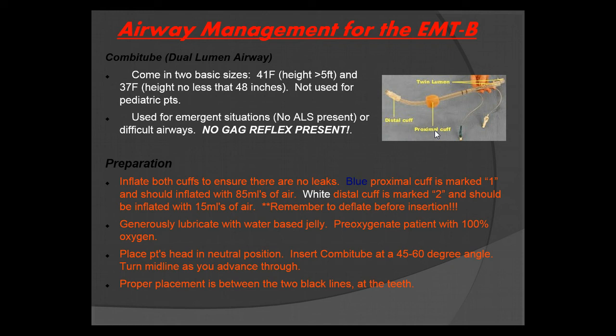To prepare the combi tube, inflate both cuffs to ensure there are no leaks. The blue or proximal cuff is marked number 1 and should be inflated with 85 mL of air. The white distal cuff is marked 2 and should only be inflated with 15 mL of air. Remember to deflate both cuffs before you attempt to place the combi tube. Then generously lubricate the tip with water-based jelly — every service provides surgical lube. Pre-oxygenate your patient with 100% oxygen via BVM and place the patient's head in a neutral position.